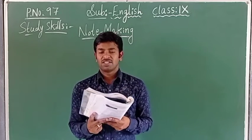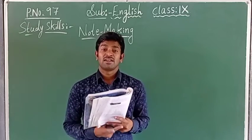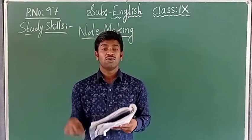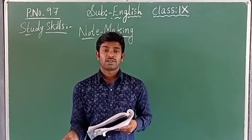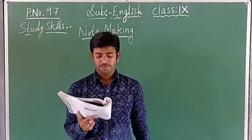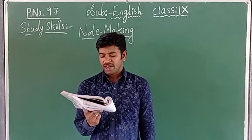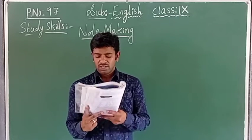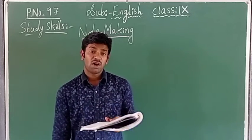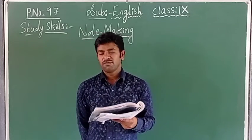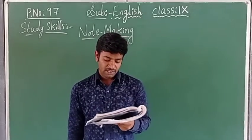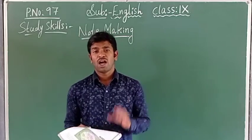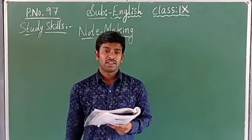Next, condense the information — get the meaning of the information. Next, omit examples and illustrations. Then organize the condensed information in a suitable format — whatever you have noted, you should organize it in a condensed form. Next, keep a suitable title — after noting down, you should keep the appropriate title which is suitable for the passage.